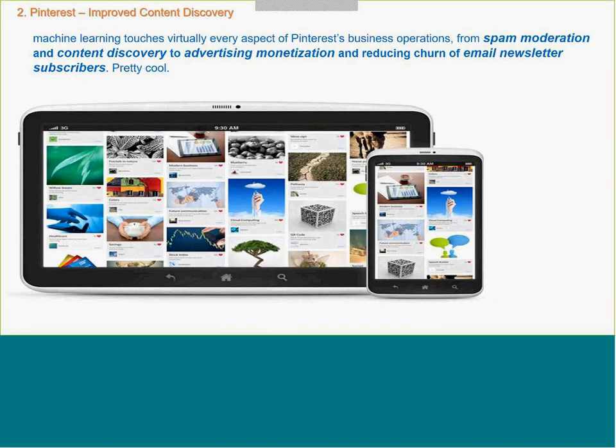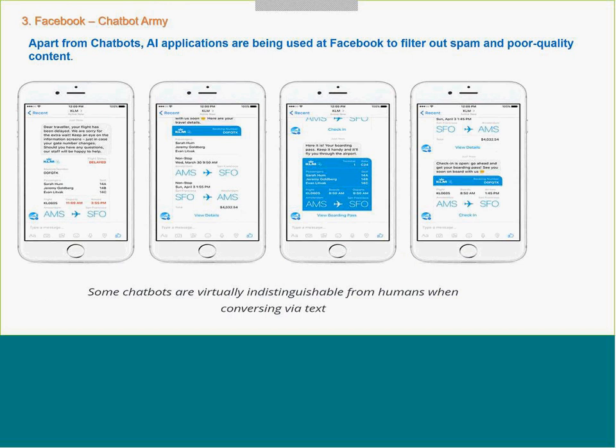Pinterest uses machine learning for spam moderation and heavily for content discovery. They also use it to optimize emails sent to their customers. Facebook uses chatbots written using machine learning, and machine learning is also used to filter out spam and poor quality content.